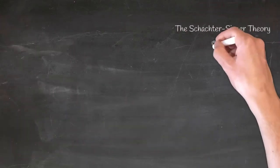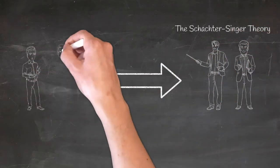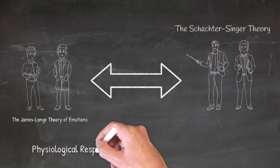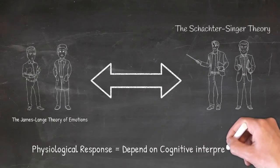The Schachter-Singer theory takes on board the physiological response to stimuli that James-Lange theory talks about and suggests that the same physiological response can produce a different emotion that will depend on the situation and the cognitive interpretation that someone will use to label that emotion.